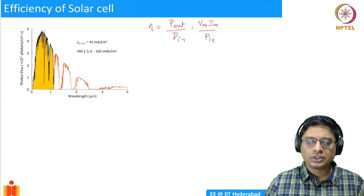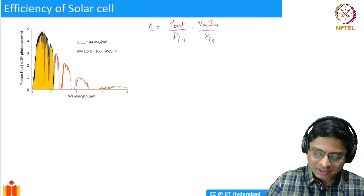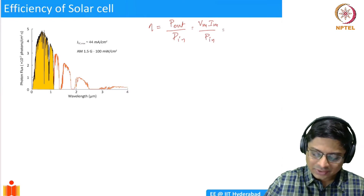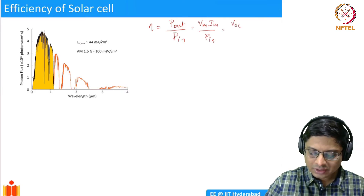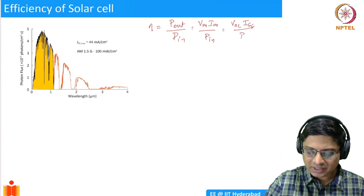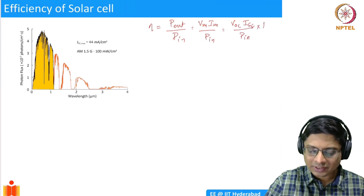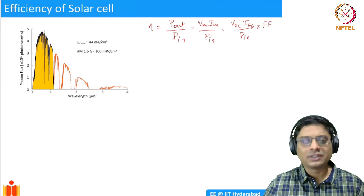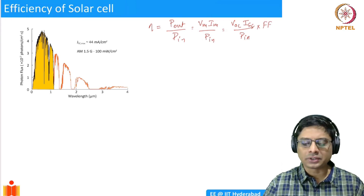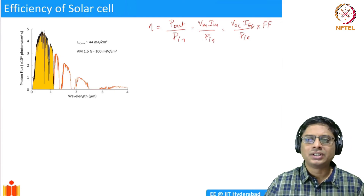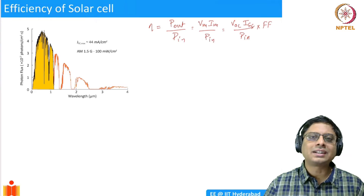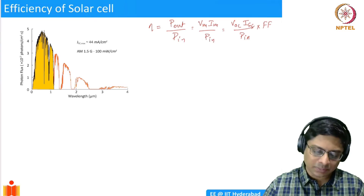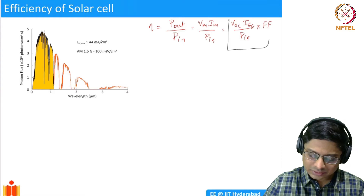Maximum power points are not easy to measure, so it is convenient to rewrite efficiency as Voc times Isc divided by Pin, times the fill factor. We have already defined fill factor; it is typically 0.7 to 0.8. So if you measure Voc and Isc, you can easily calculate the efficiency of a solar cell using this convenient expression.